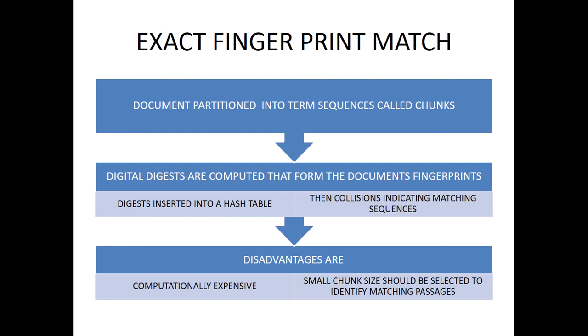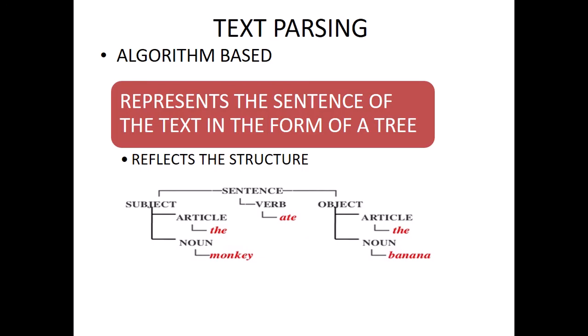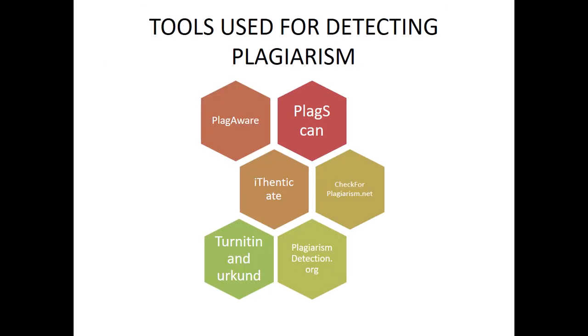Smaller chunk sizes are selected to identify matching passages. In text parsing, a tree is formed that reflects the document structure. For example, a sentence like 'the monkey ate the banana' is analyzed to identify where it was taken from and in what sequence, detecting when different words are taken from a similar source.